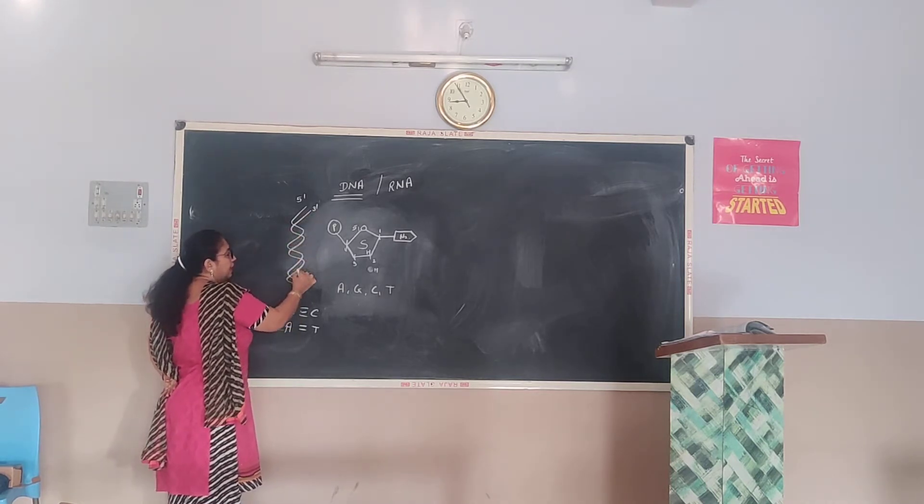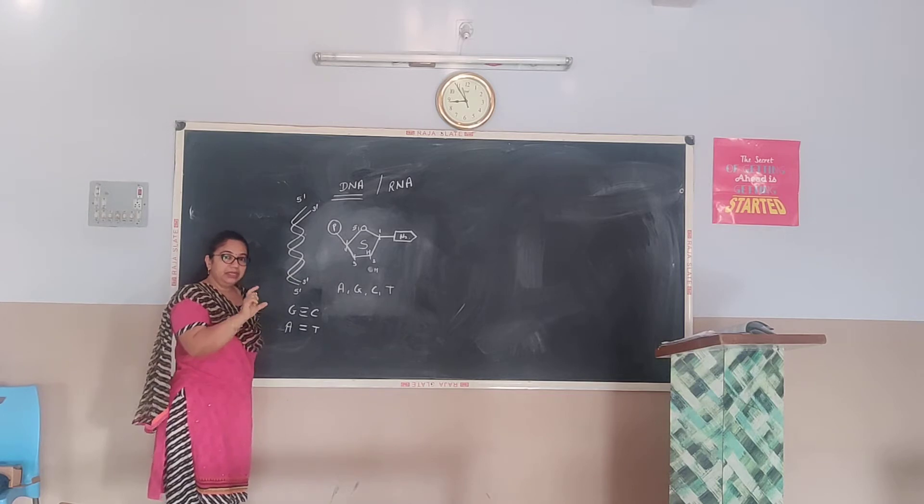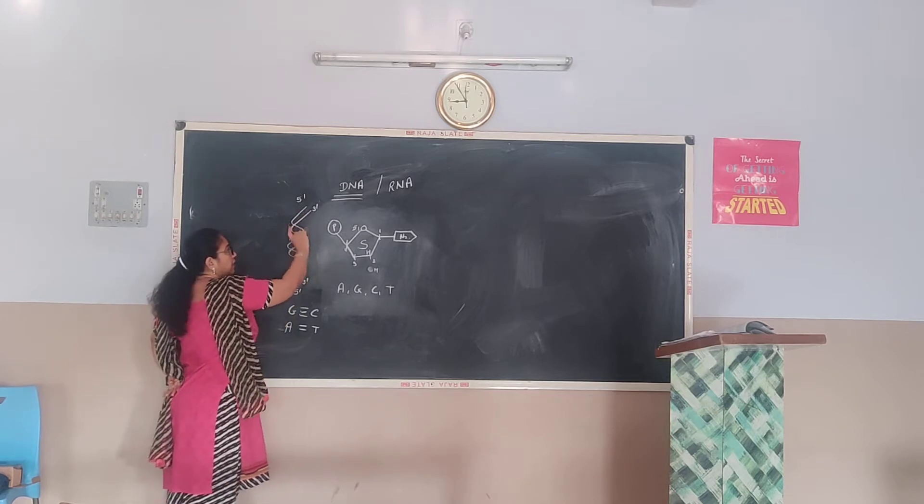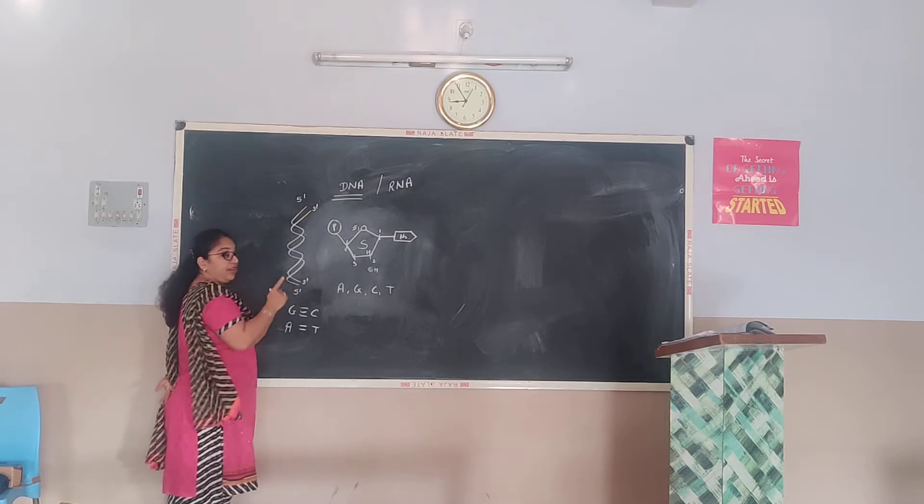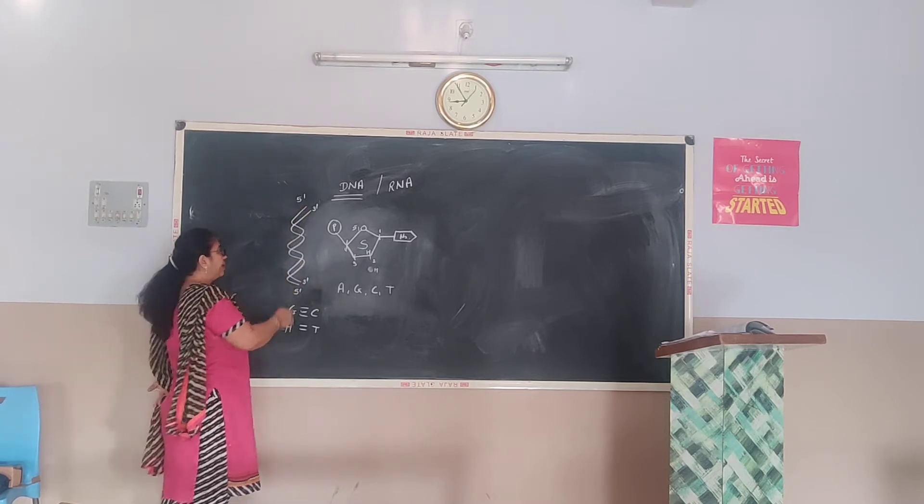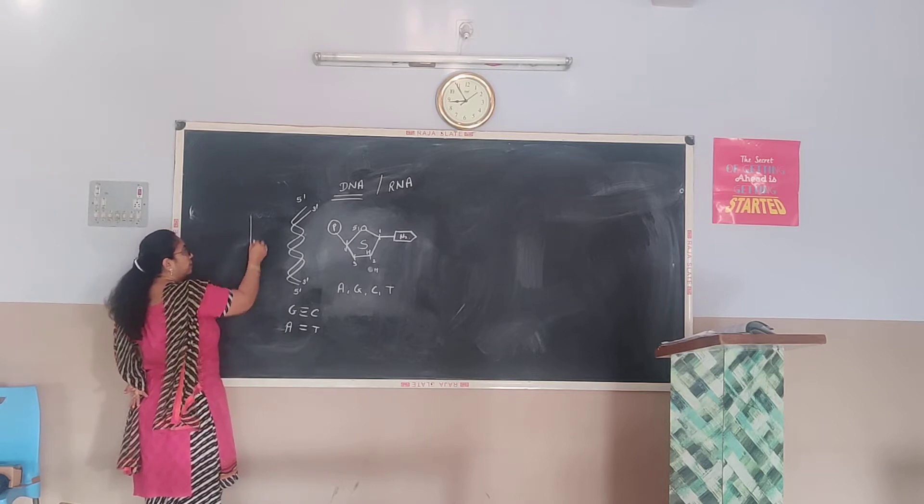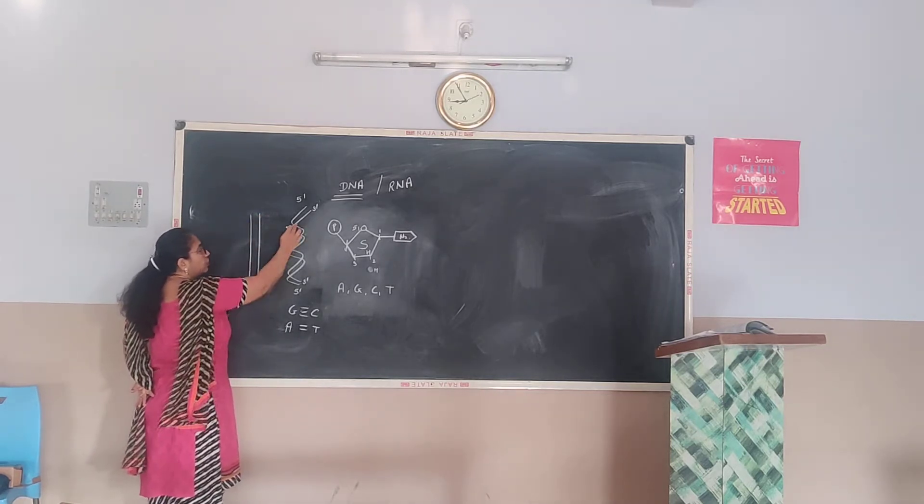So let us see that how it looks when you observe a microscope. It looks like a double-helical structure. Helical is twisted. If you see here, it is twisted like a spring. Both the springs are twisted together.